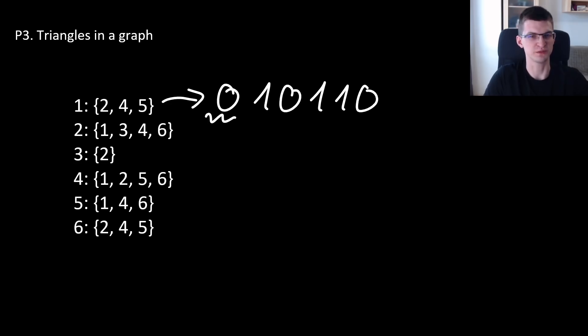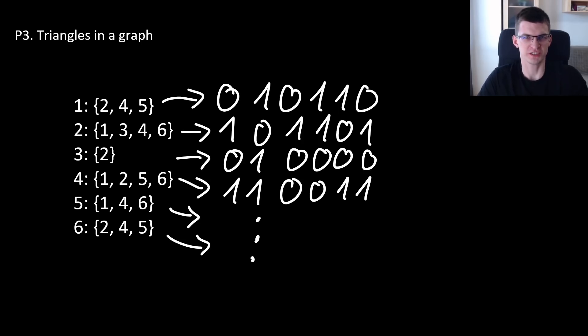For 2 it will be 1, 0, 1, 1, 0, 1 and so on. This is for now just an alternative representation of the input. Instead of list of edges or adjacency list for every vertex, I can remember bitmask of adjacency for every vertex. And thanks to that I can now take 2 vertices and compute - well, what can I do in particular? I can compute the intersection. The intersection of neighbors of 1 and 2.